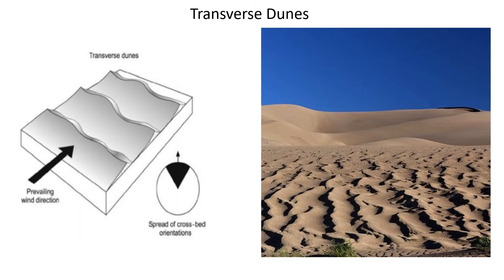Transverse dunes are almost straight sand ridges oriented at right angles to the predominant wind direction, with regularly spaced ridges separated by large interdune areas. Some argue that transverse dunes are highly unstable and will eventually break up into barchan and linear dunes; however, others say they are stable due to their predominance in many desert areas. It is believed that transverse dunes are more commonly found in areas that were once shallow lakes, which would dampen the sand surface and inhibit the formation of the horn structure found in barchans.